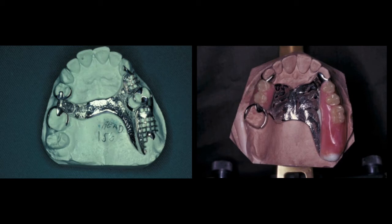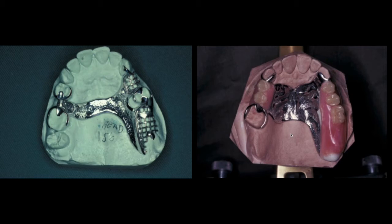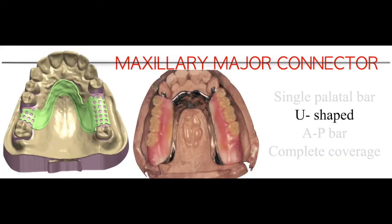If more teeth are missing compared to the first case, you need to increase the width of the palatal bar—making it wider because it needs more support. This is still considered a single palatal bar. The second option is called the U-shape. The U-shape is quite versatile and universally used due to the strength provided by its shape.